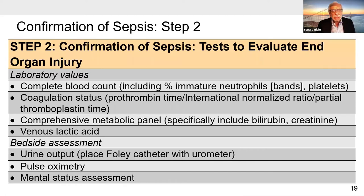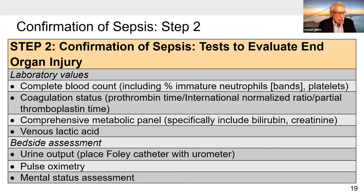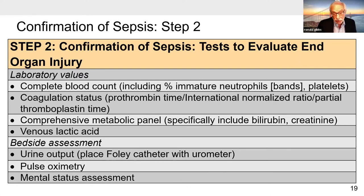Step Two is a confirmatory step looking at tests to evaluate end-organ injury or organ dysfunction. In the flow sheet, these include a CBC, coagulation studies, a comprehensive metabolic panel, a lactic acid, and bedside assessment of urine output, pulse oximetry, and mental status assessment.